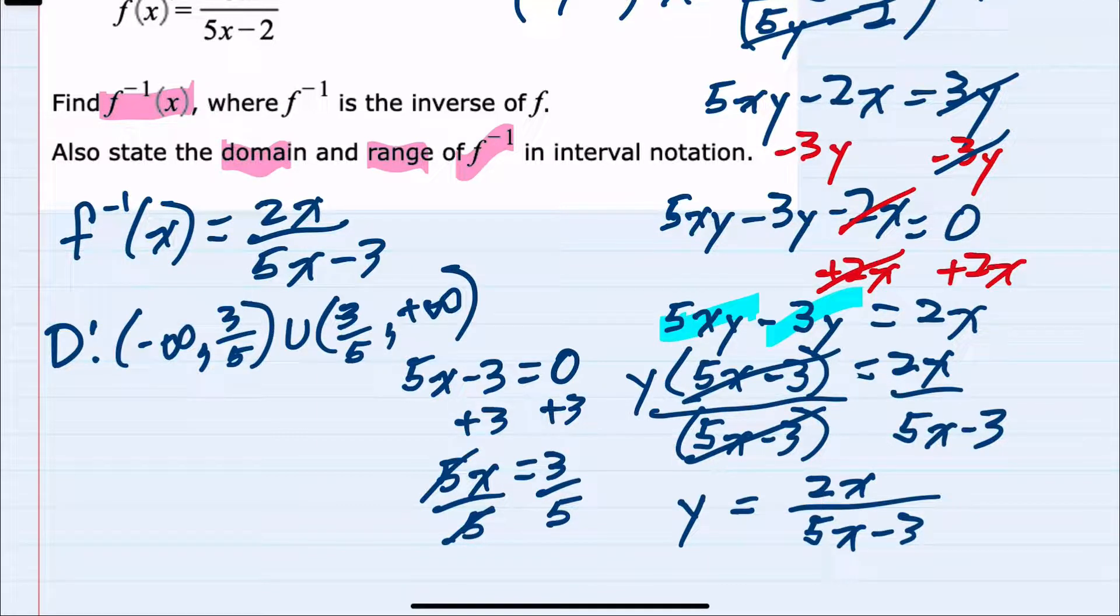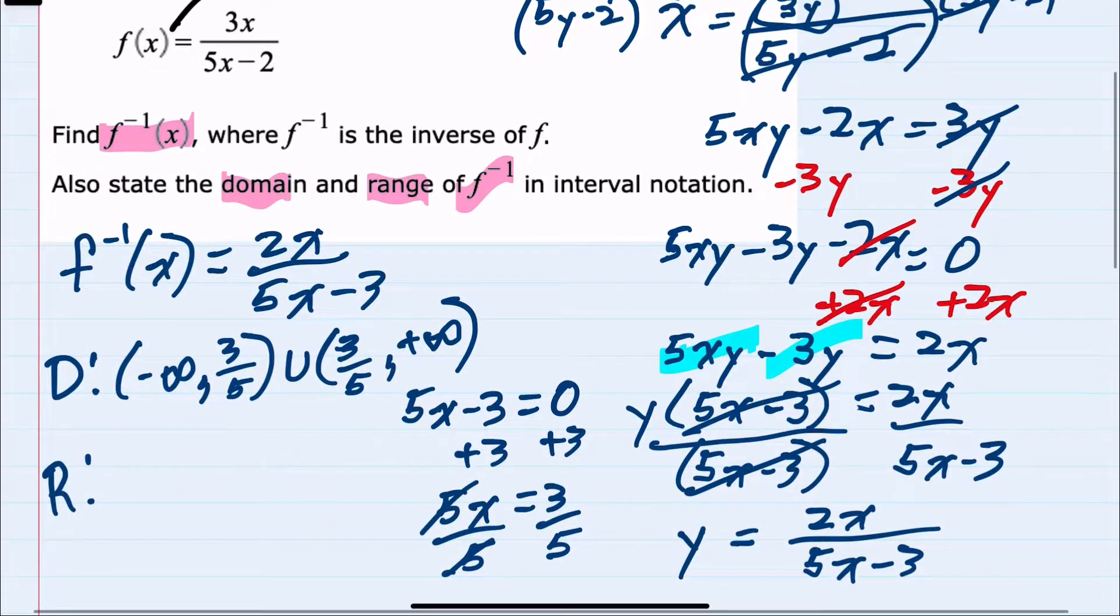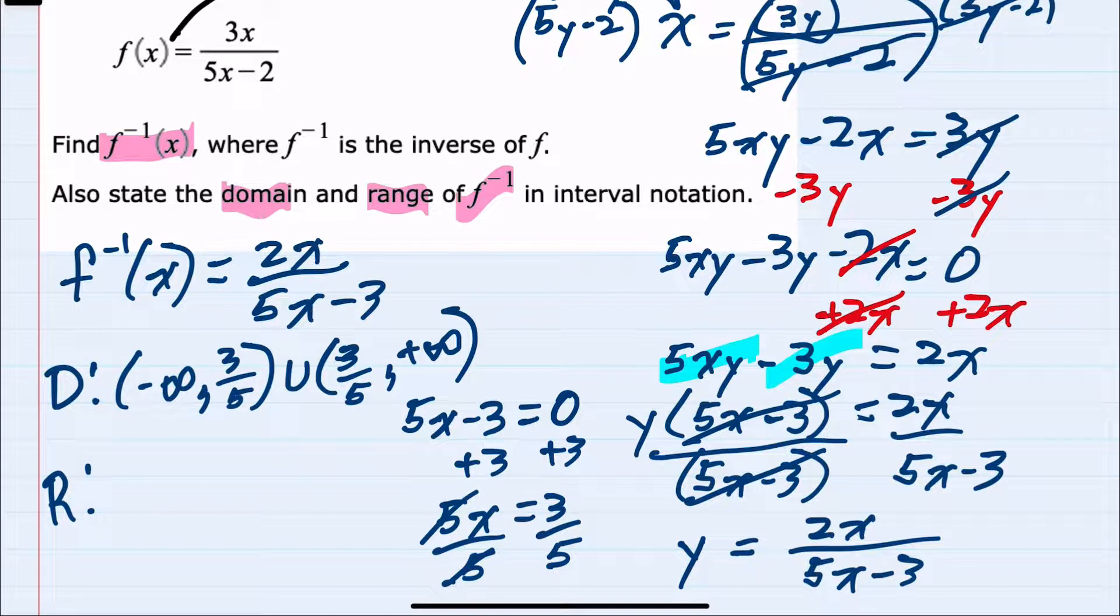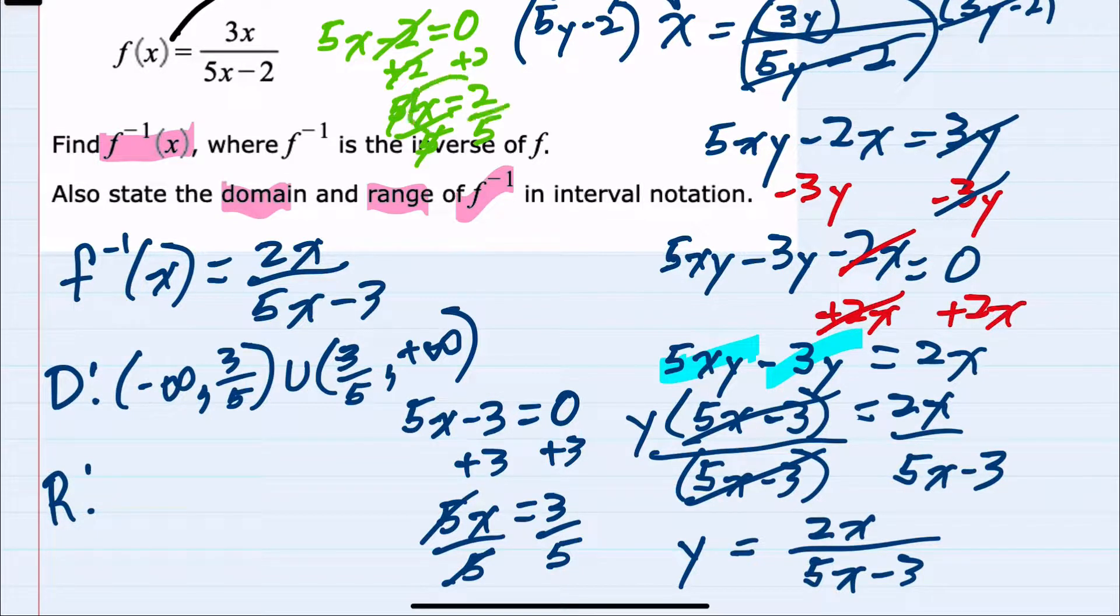So for our domain here, we have eliminated 3 fifths. We're also asked for the range of our inverse function. And from here, we should recall that the range of the inverse function will be the domain of the original function. And in this original function, we have to exclude when 5x minus 2 equals 0. Here solving, we have 5x equals 2, so x equals 2 fifths. We have to exclude that from the domain of the original function, which means it will be excluded from the range of the inverse function. So just like before, I'm excluding, but this time I'm excluding 2 fifths. So negative infinity to 2 fifths, union with 2 fifths to positive infinity.